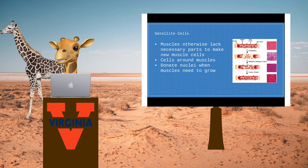So this is where satellite cells come in. Satellite cells are cells that surround skeletal muscles throughout the body. When these muscles need to grow, the satellite cells donate nuclei that allow new muscle cells to be formed.